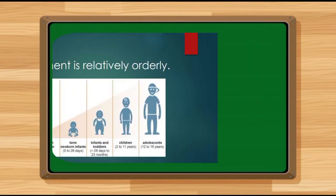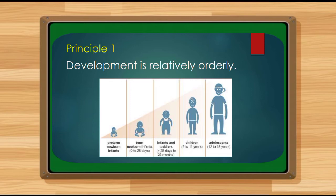Now we have the principles of human development. The first principle is that development is relatively orderly. As observed in the illustration, from preterm newborn infants, to newborns (0–28 days), infants and toddlers (28 days to 23 months), children (2–11 years old), and adolescents — there are certain developments and growth that happen in every stage in a relatively orderly, chronologically sequenced manner. Development should be relatively orderly and sequential.